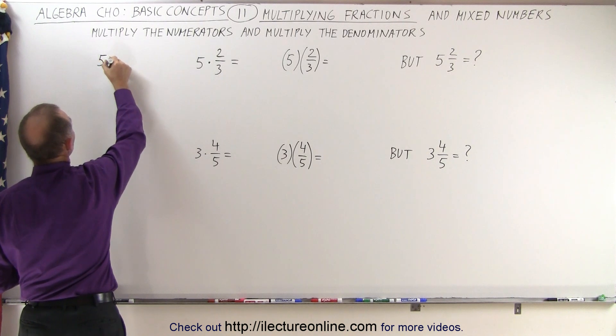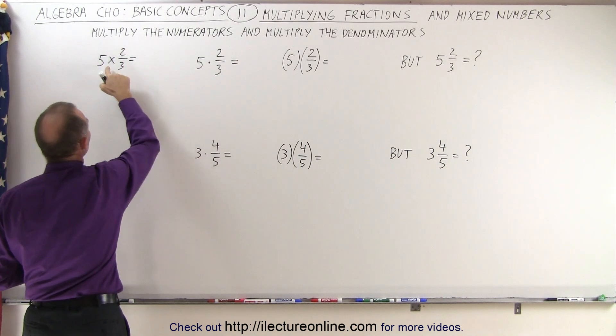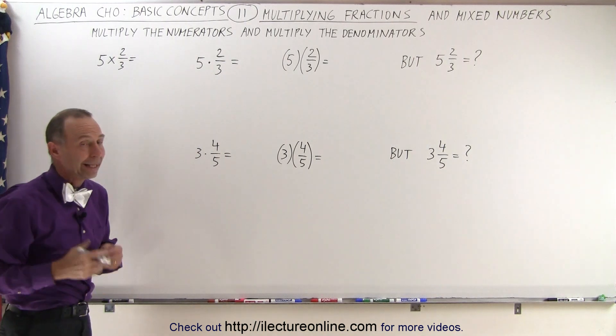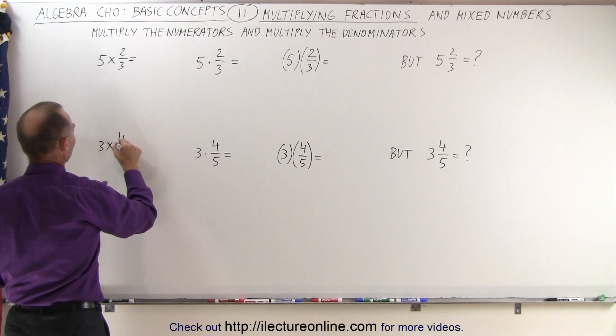Matter of fact, I can also add this thing right here. Sometimes we can simply write as 5 times 2 thirds, so instead of writing a dot we can simply write the multiplication sign. And that means exactly the same thing. We'll do it the same over here: 3 multiplied times 4 fifths.